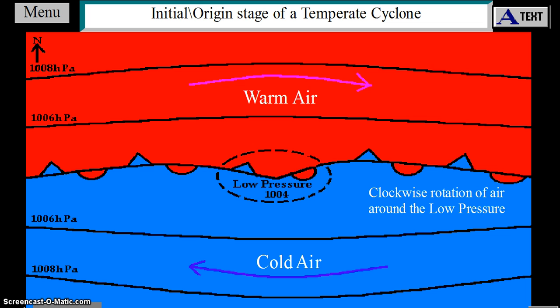A low-pressure cell develops. The low-pressure strengthens at the apex and winds begin to rotate clockwise around the low-pressure cell in the southern hemisphere.